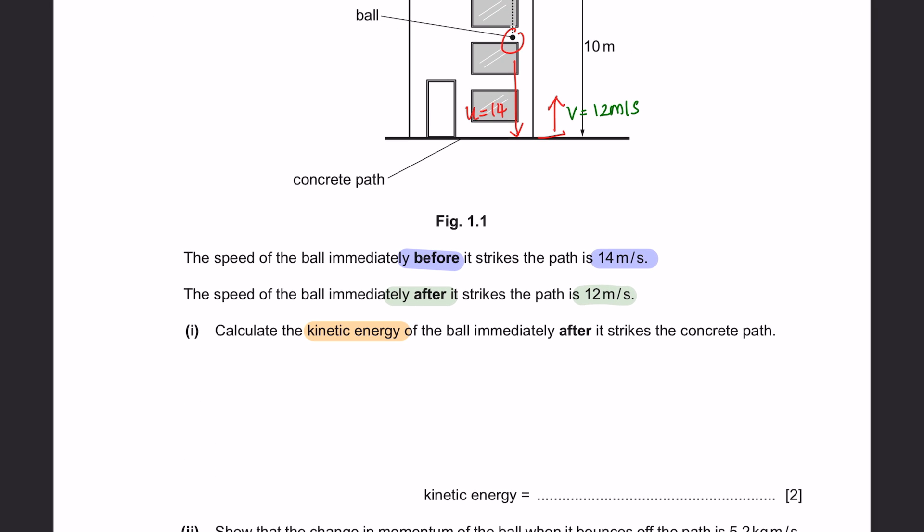Part 1. Calculate the kinetic energy of the ball immediately after it strikes the concrete path. Immediately after meaning that we need to find the kinetic energy over here. The formula for kinetic energy is 1 over 2 mv squared. The mass given is 0.2 kilograms. And there are two velocities given here, 14 and 12. Since we are looking to calculate the kinetic energy immediately after it strikes, this is the velocity that we are going to take. So the answer here is 14.4 and the units are joule. Remember, your answer should always be in two significant figures. So the final answer is 14 joules.